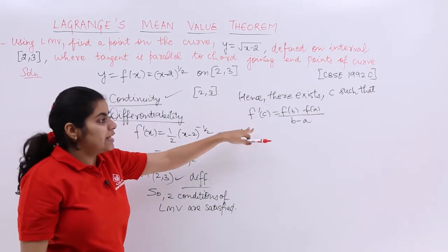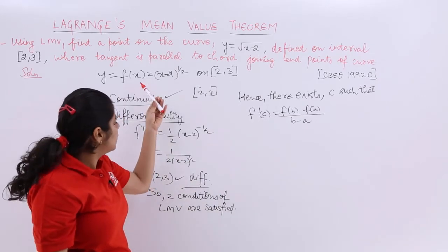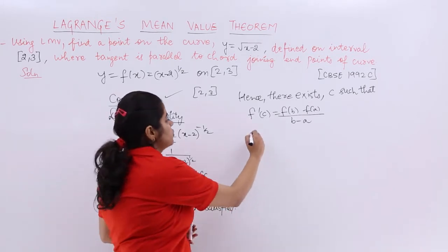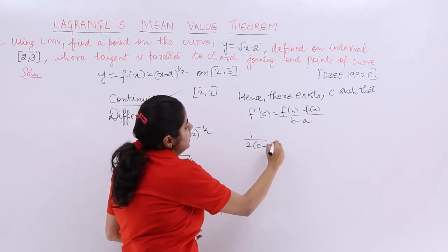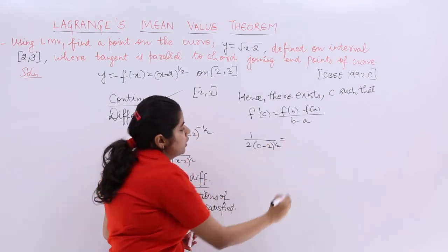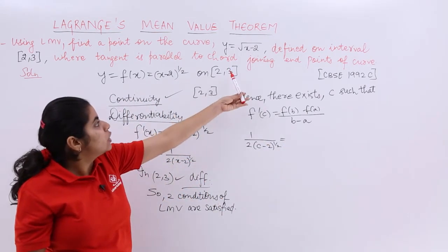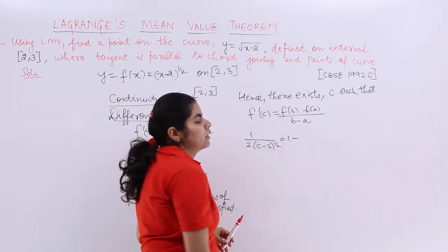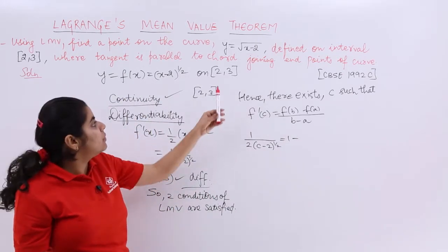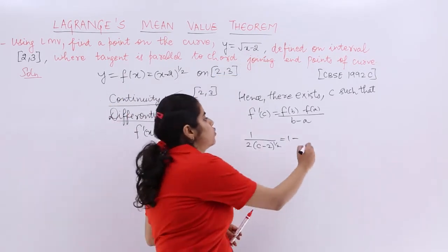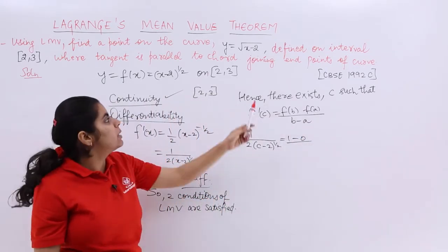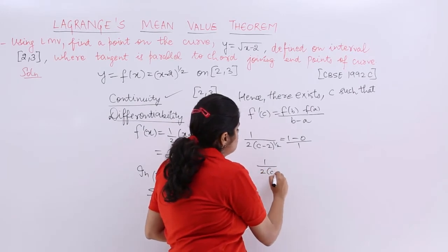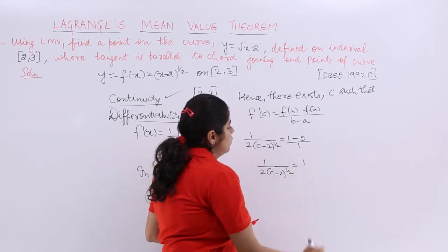Now, f'(c) = 1 / [2√(c − 2)]. For f(b), put x = 3: f(3) = √(3 − 2) = √1 = 1. For f(a), put x = 2: f(2) = √(2 − 2) = 0. And b − a = 3 − 2 = 1. So the equation becomes: 1 / [2√(c − 2)] = (1 − 0) / 1 = 1.